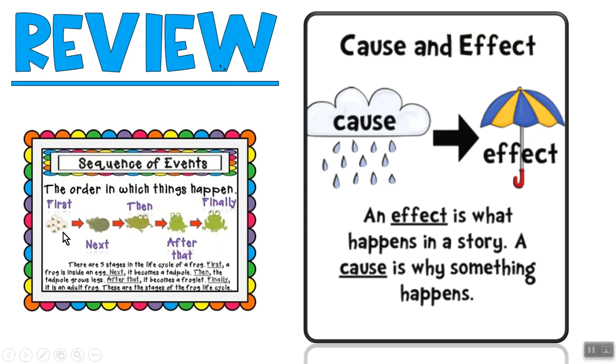So this is a really popular example and I love these little keywords that they have: first, next, then, after that, and finally. So this one says there are five stages in the life cycle of a frog. First, a frog is inside an egg. Next, it becomes a tadpole. Then the tadpole grows legs. After that it becomes a froglet. Finally, it is an adult frog. These are the stages of the frog life cycle.